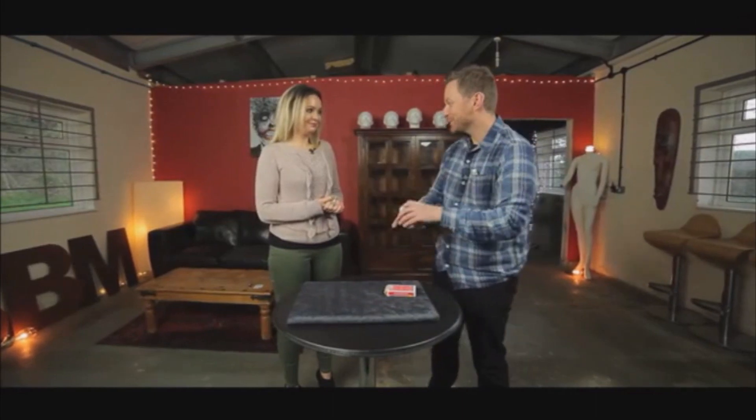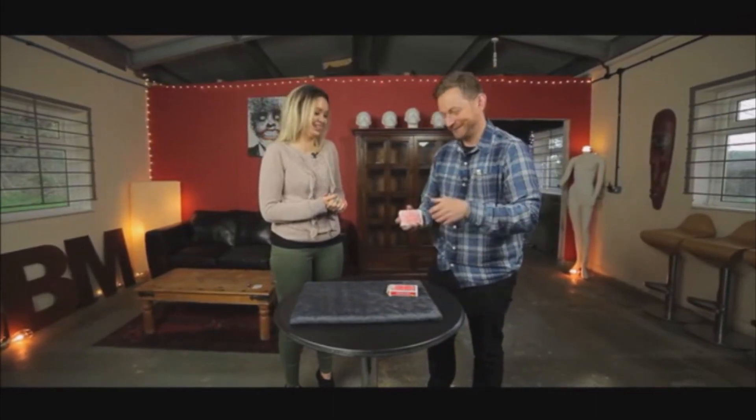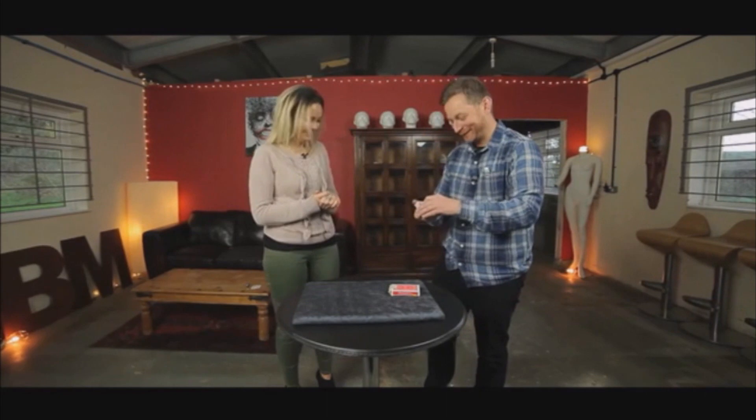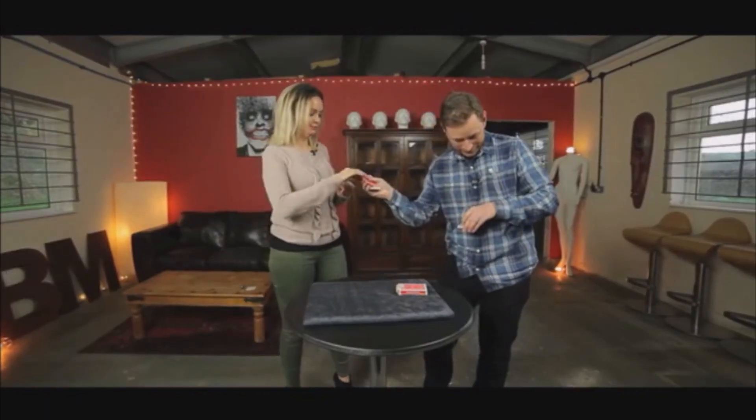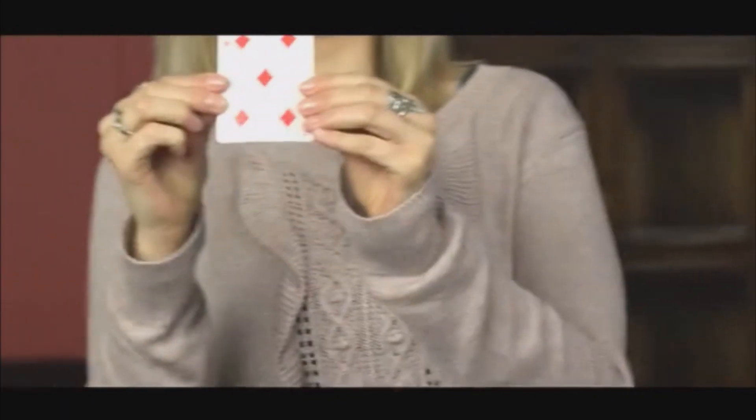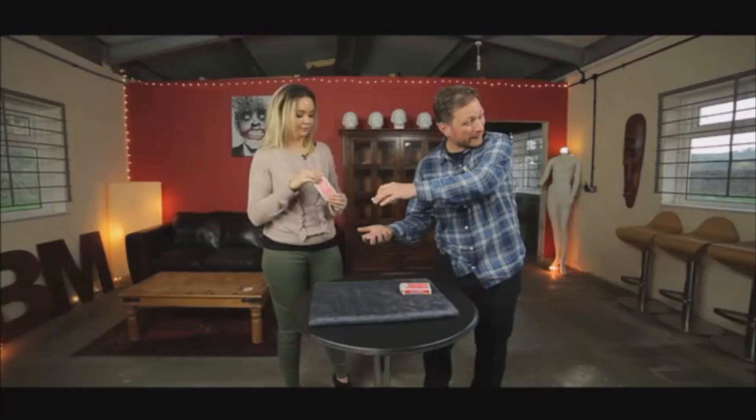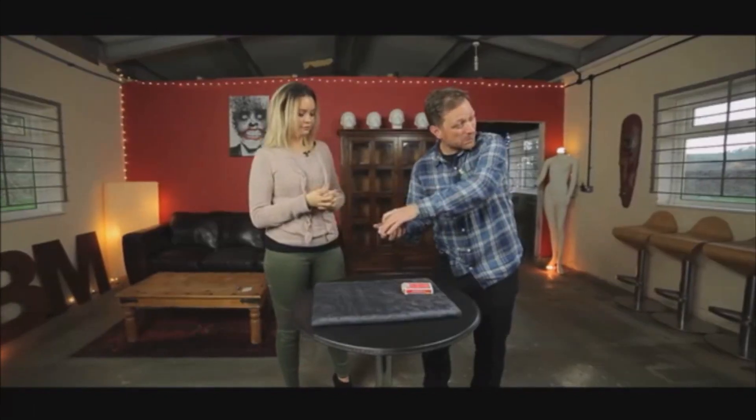What's the overall quality and production value of the video? Big Blind Media always makes great videos. You're back in the Big Blind Studio Red Room for all the filming. Steve does the entire routine for a female spectator in studio, and then goes over everything you need to know with Liam Montier. Everybody's well-miked, there's no annoying background music.